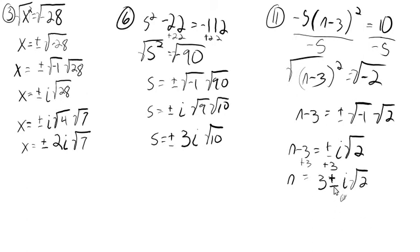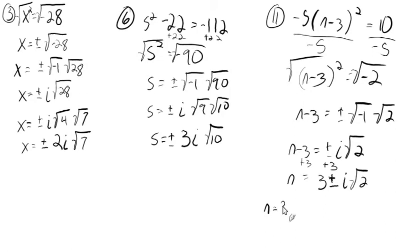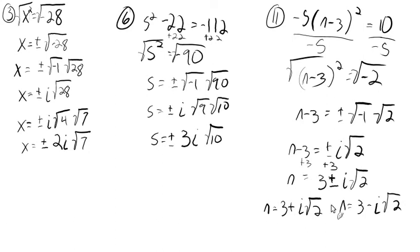We saw a similar form in the previous section, except now we have this i involved — this imaginary unit. So this represents two solutions, two imaginary solutions: n equals 3 plus i times the square root of 2, and n equals 3 minus i times the square root of 2. Two solutions, two imaginary numbers.